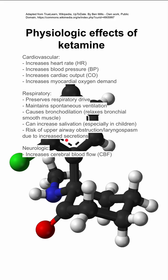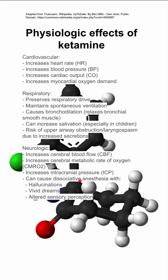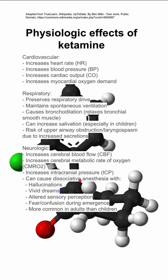Neurologic: ketamine increases your cerebral blood flow, increases your cerebral metabolic rate of oxygen usage, and increases your intracranial pressure. It can cause dissociative anesthesia with hallucinations, vivid dreams, altered sensory perception, fear, and confusion during emergence. These dissociative symptoms are more common in adults than children.